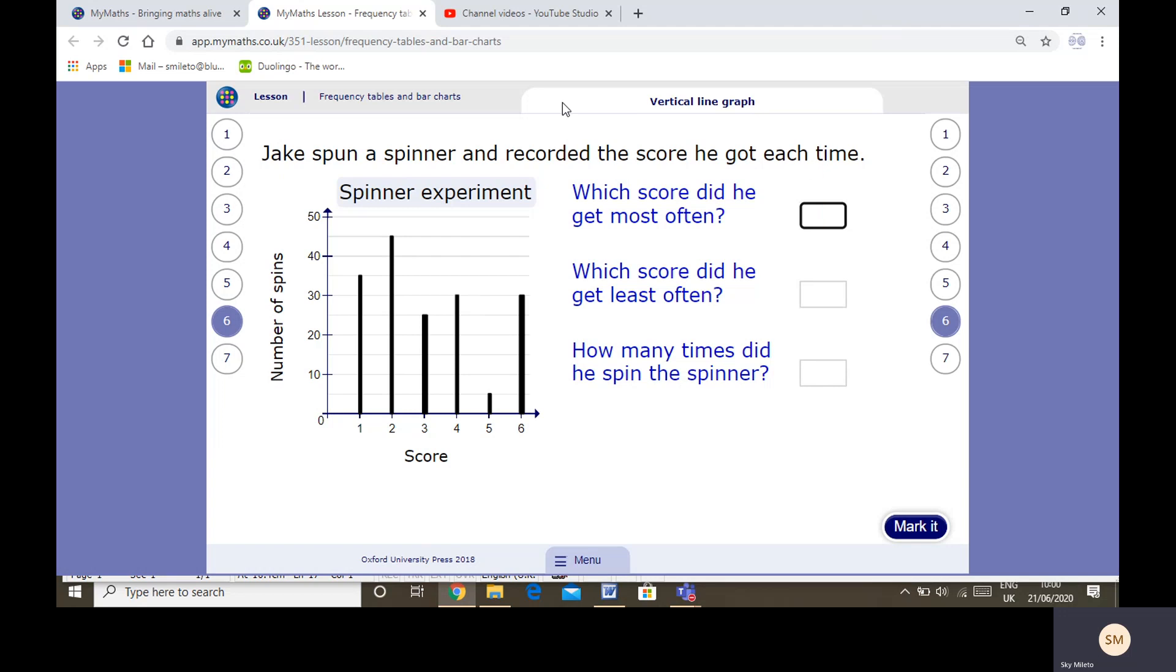Jack spun a spinner and recorded the results. Pause it and see if you can answer these questions. Which score did he get most often? Let's have a look. Number of spins and score. The one that's the tallest, the one that's the higher up, means that he had the most frequency is 2. Which did he get least often? You can see the shortest means that he got the least frequency. Number of spins would be 5. How many times did he spin the spinner? So we need to count up all the frequencies. So this would be 35 plus 45 plus 25 plus 30 plus 5 plus 30.